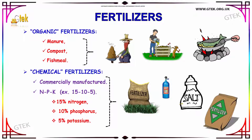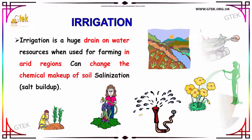This fertilizer is also used as a pesticide. Now let us discuss about irrigation. Irrigation is a huge drain on water resources when used for farming in arid regions.